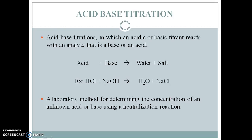Let us start some discussion regarding acid-base titration. Acid-base titration is a type of titration in which an acidic or basic titrant reacts with an analyte that is a base or acid. For example, if we have an acidic solution whose concentration is known to us, then we can determine the concentration of a basic solution by titrating it with the acidic solution. It is simply a laboratory method used for the determination of concentration of an unknown acid or base using a neutralization reaction.